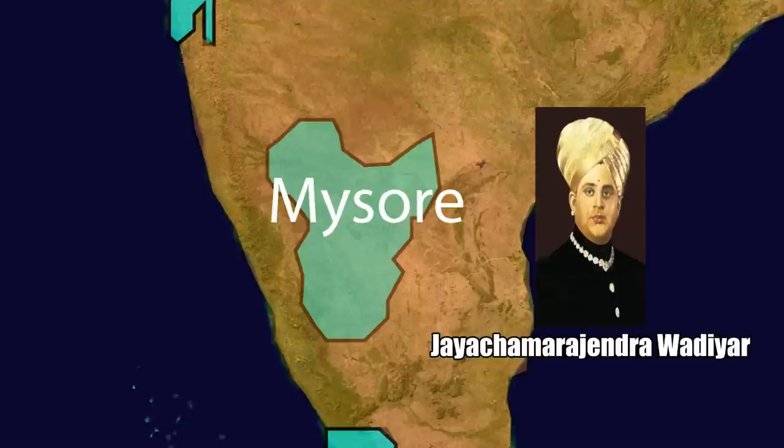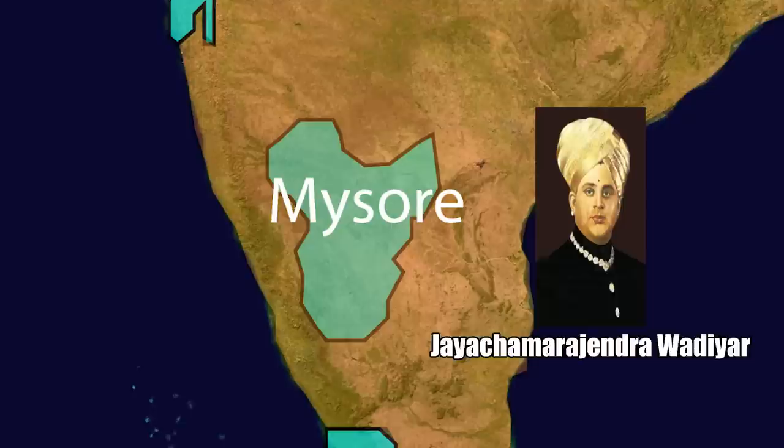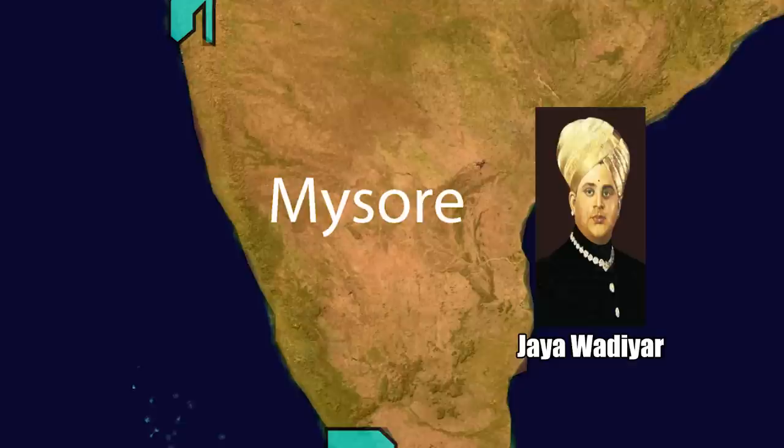South of Hyderabad was the Kingdom of Mysore. Under the rule of Jaya Wadiar, the Kingdom of Mysore became the first princely state to join India, agreeing to do so on the eve of independence. He became the first governor of the state of Mysore from 1950 to 1956, and would continue to serve as governor from 1956 to 1964 after it was reorganized along linguistic lines. His last public office would be serving as governor of the state of Madras from 1964 to 1966.